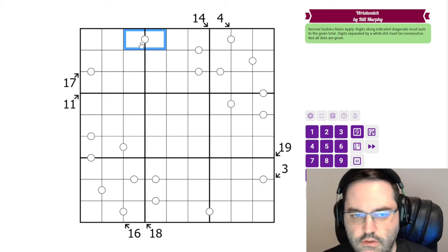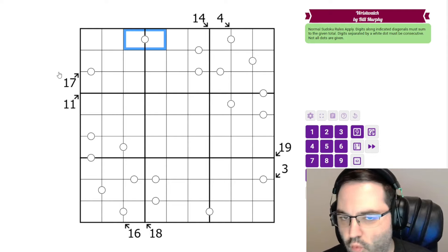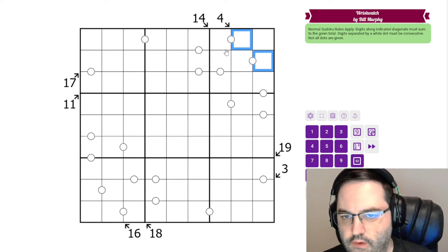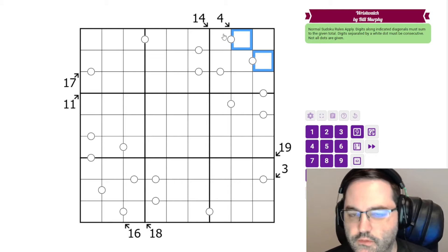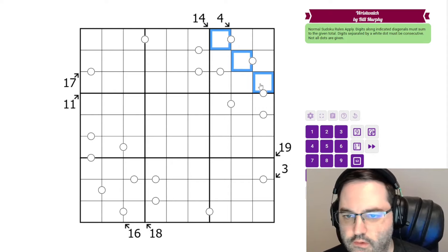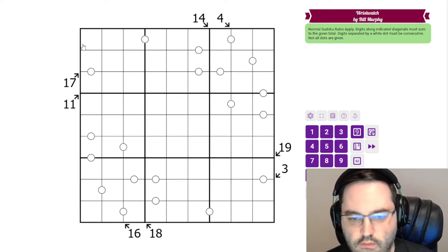Consecutive pairs: digits connected by white dots must be consecutive, have a difference of 1. Little killer: we have clues outside the grid that tell us the sum of digits along the indicated diagonal. So these two digits sum to 4, these three sum to 14, and so on.